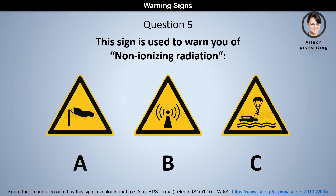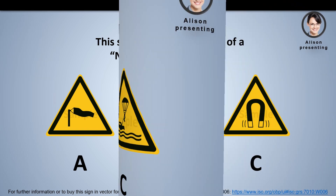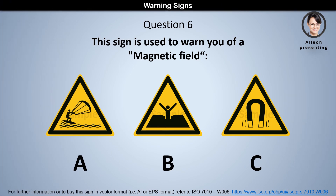Question 5: This sign is used to warn you of non-ionizing radiation. Is it a, b, or c? The answer is b. Question 6: This sign is used